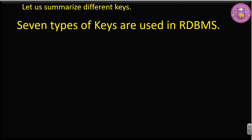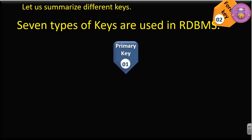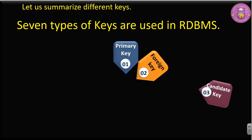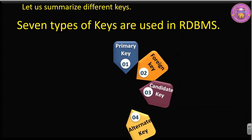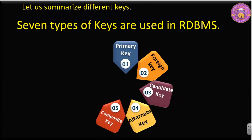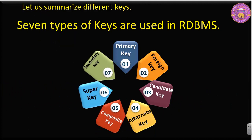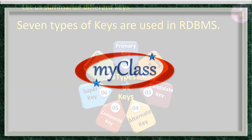Let us summarize the different keys. There are seven types of keys used in Relational Database Management System: primary key, foreign key, candidate key, alternate key, composite key, super key, and secondary key. These are the seven different types of keys. Thank you very much.